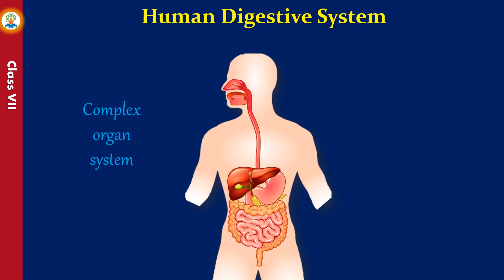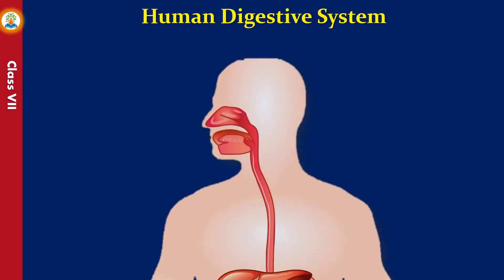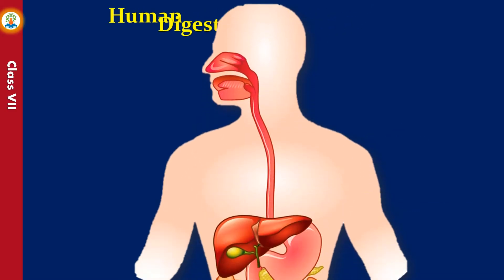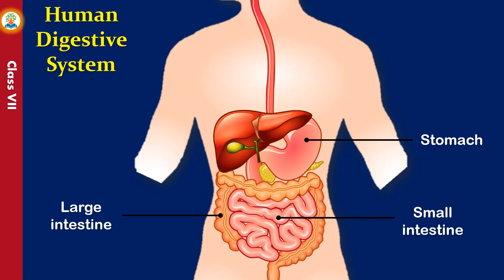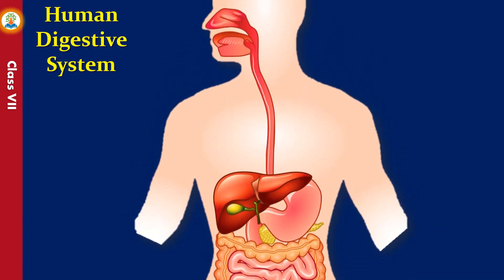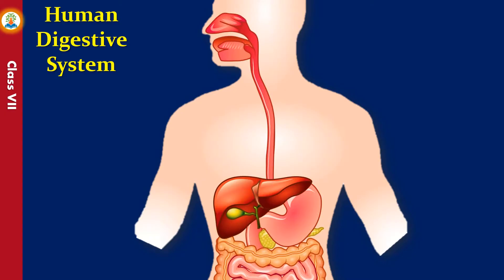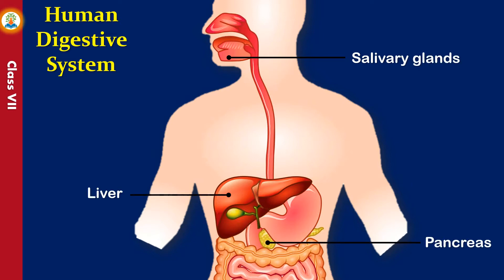The digestive system of human beings is a complex organ system consisting of many organs such as the mouth (also called the buccal cavity), esophagus or food pipe, stomach, small intestine, large intestine, rectum, and anus. There are certain glands associated with the digestive tract: salivary glands, pancreas, and liver. These glands also play an important role in the process of digestion.